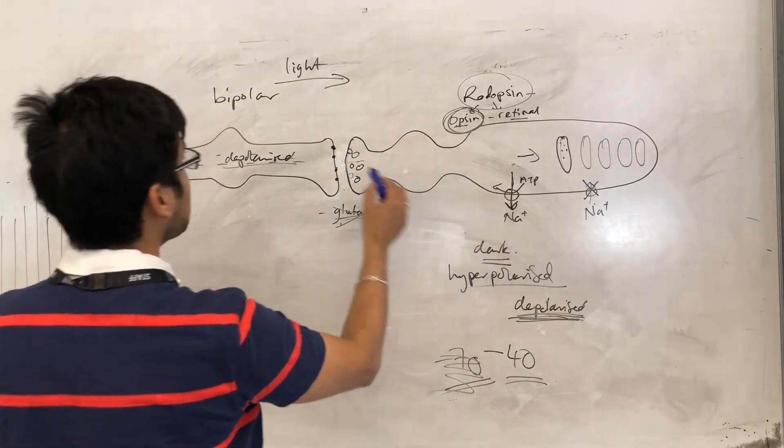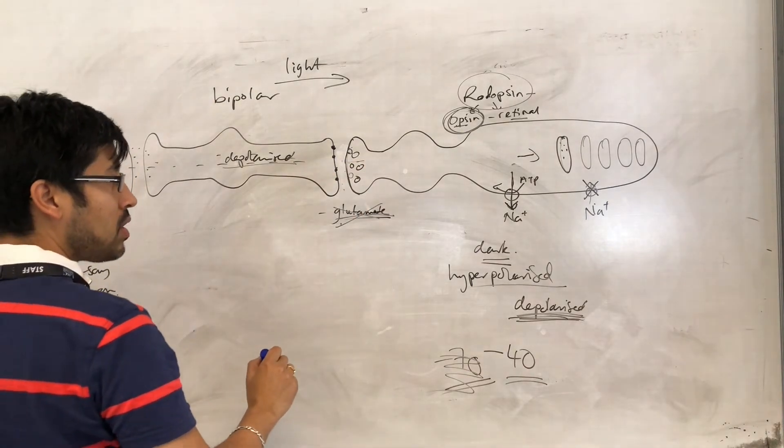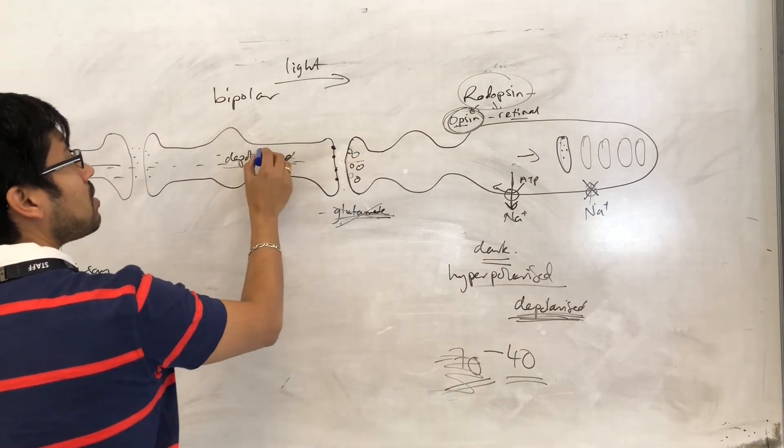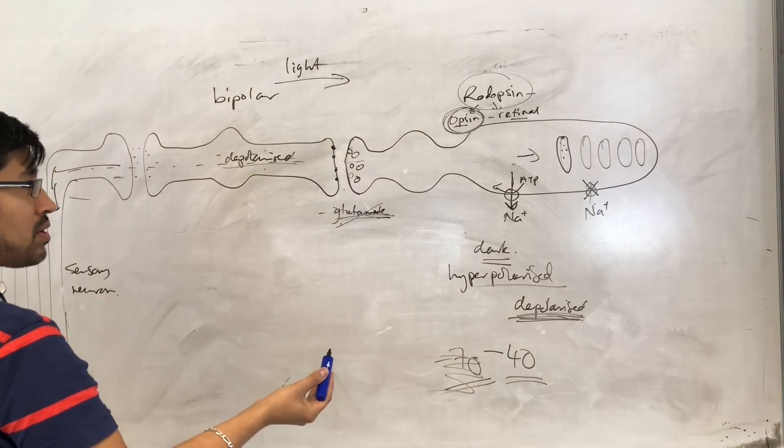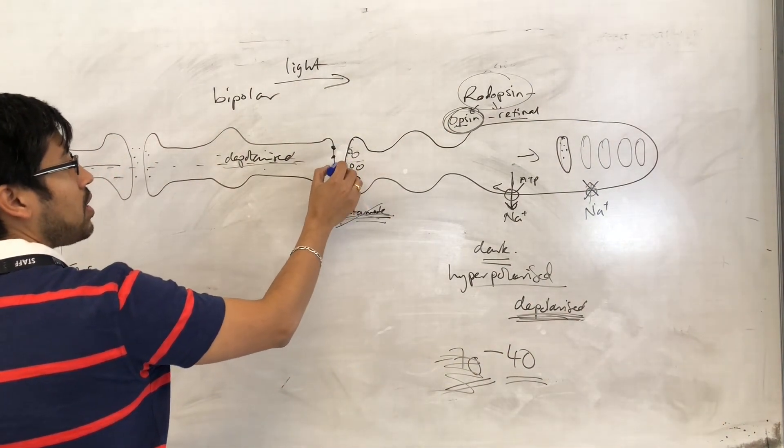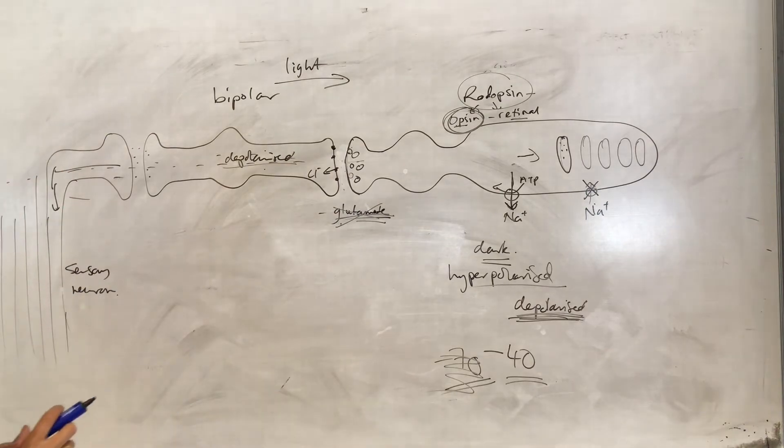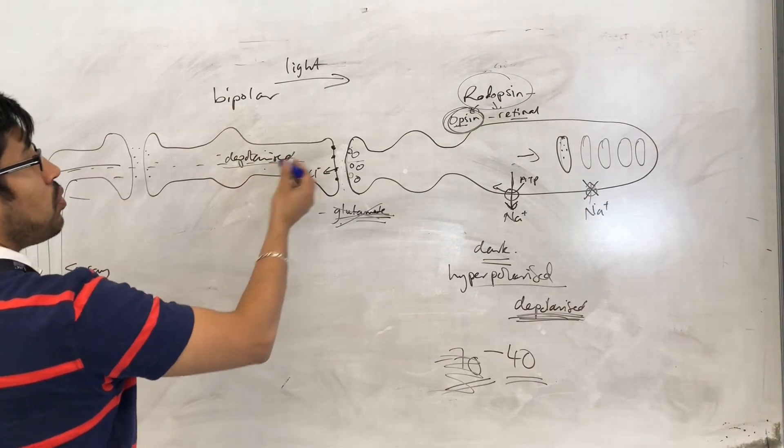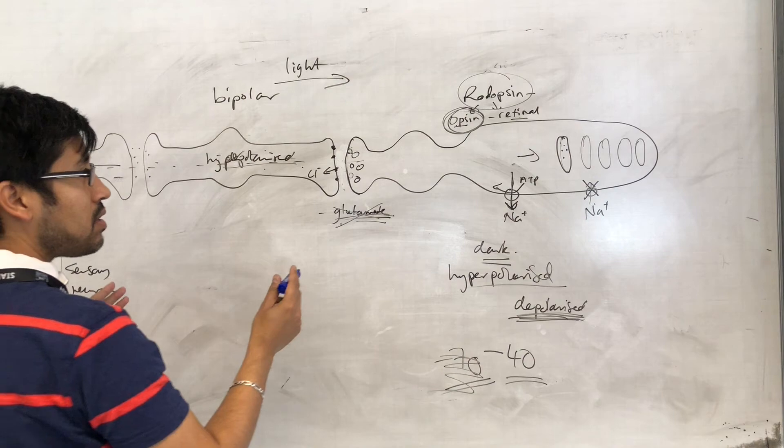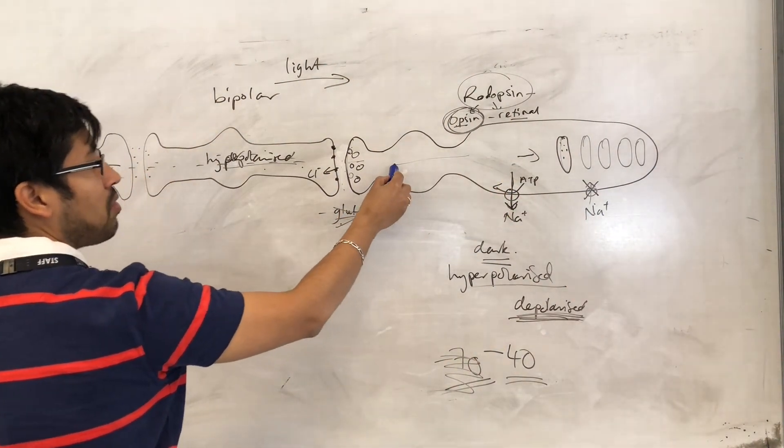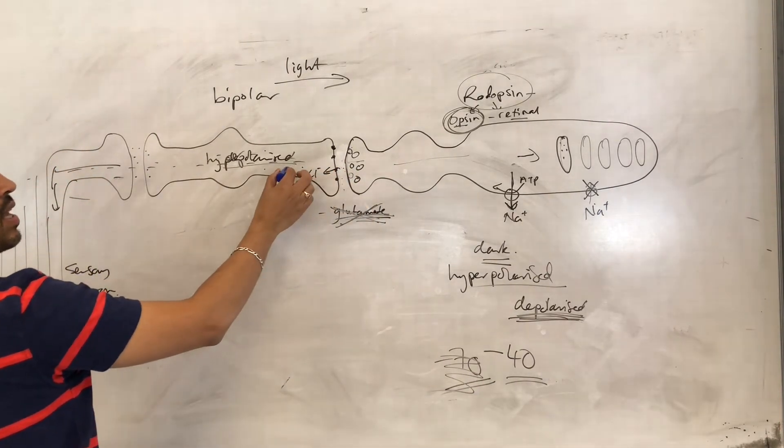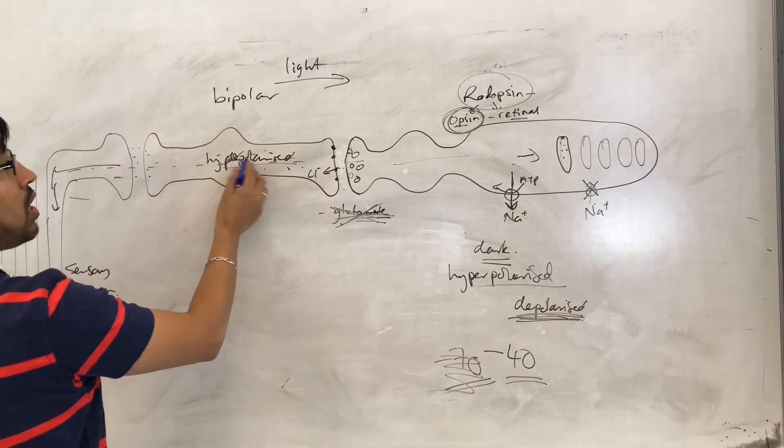So when there's light present, glutamate is not released into the synaptic cleft. And if glutamate is not there, then it is not inhibiting this, or it's not causing this cell to be hyperpolarized. So remember, the glutamate was an inhibitory neurotransmitter. When it bound, it allowed negative ions into this cell, which caused it to be hyperpolarized. But, if this cell is no longer depolarized, it is no longer releasing glutamate. The glutamate is no longer allowing chloride ions to come into this cell. It is no longer causing this cell to be hyperpolarized.